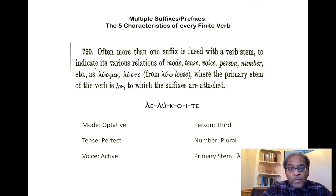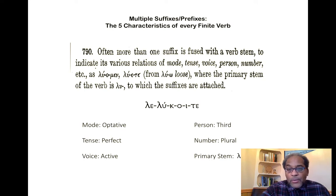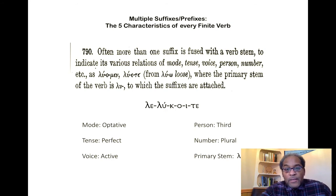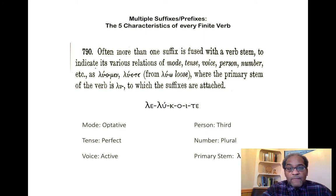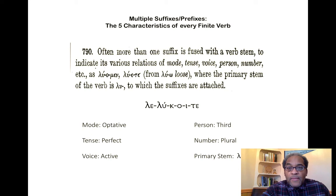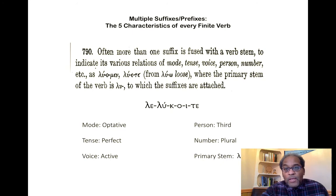If you take a more complex example, like le-lu-koi-te, you see the various elements. The mood is the optative, the tense is the perfect, the voice is active, the person is third, the number is plural, and the primary stem is luo. The le is the reduplication that signals the perfect, the luo is the stem, the k is the tense suffix, the omicron is the thematic vowel, the iota is the suffix indicating the optative, and the te is the ending — second person plural.